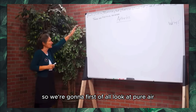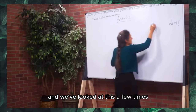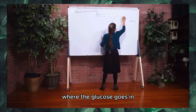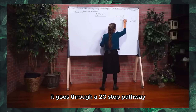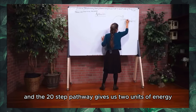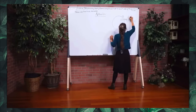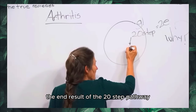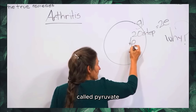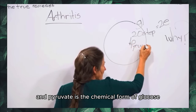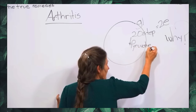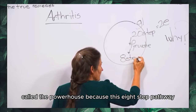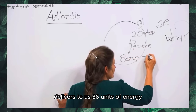We're going to first look at pure air. In the cell, glucose goes in through a 20-step glycolytic pathway, giving us two units of energy. The end result is a chemical form of glucose called pyruvate, which then gets fed into the powerhouse — the mitochondria — through an eight-step pathway called the Krebs cycle, which delivers 36 units of energy.